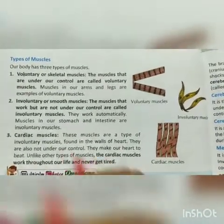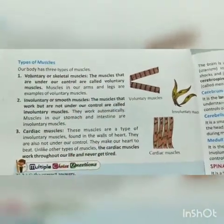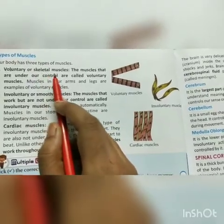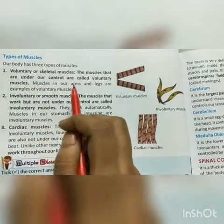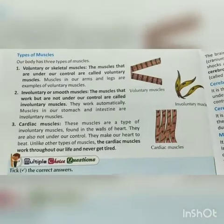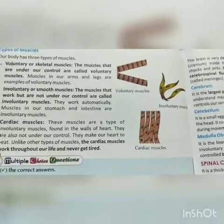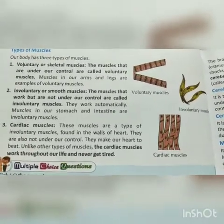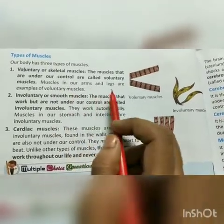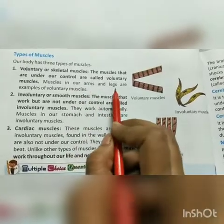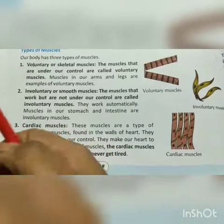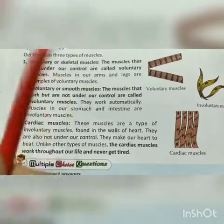Types of muscles. Our body has three types of muscles. First, voluntary muscles, also called skeletal muscles. The muscles that are under our control are called voluntary muscles. The muscles in our arms and legs are examples of voluntary muscles — we can move them as we choose.